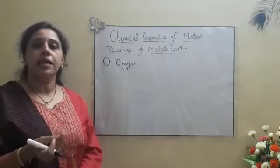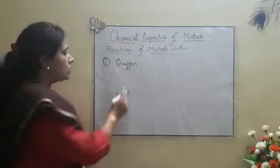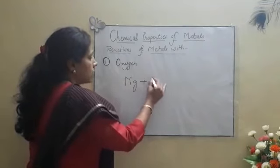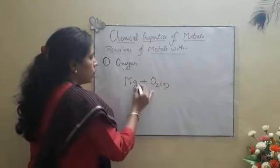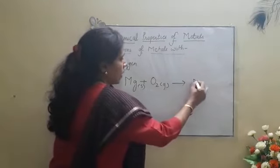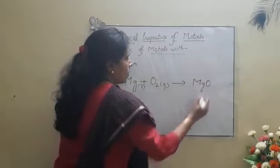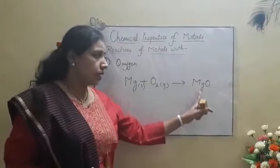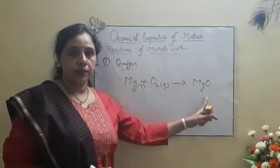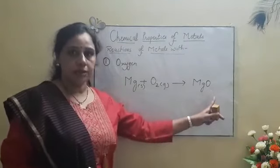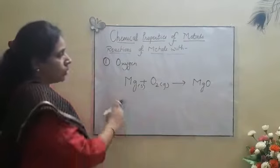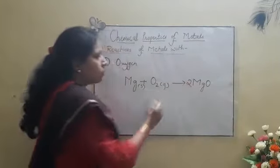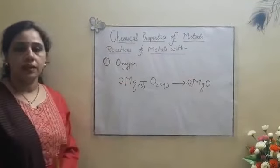That white powder is actually magnesium oxide. The reaction can be represented as Mg plus O2 gives MgO. We need to write the correct molecular formula of magnesium oxide by interchanging the valency. Now, the reaction is not balanced, so in order to balance it, we will have to write 2 here and 2 here.